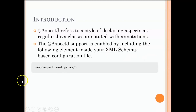We need to add this particular tag — aop:aspectj-autoproxy — in our code to make sure that our code supports annotations and is able to find out the classes using the annotations mentioned on top of them. This is a very important point: we need to add this particular line in our schema file, which in our case is the XML file that we create in our program.